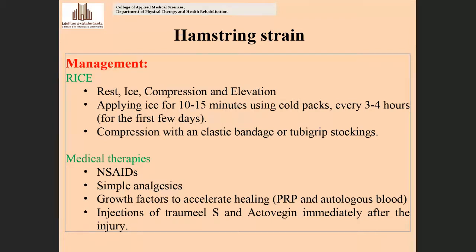Treatment of hamstring strain uses the RICE protocol: give complete rest to the hamstring muscles, apply ice immediately every two hours for 10 to 15 minutes, apply a compression bandage using crepe bandages, and keep the limb elevated at 40 to 60 degrees to reduce swelling and pain. Continue ice application using cold packs every three to four hours for the first few days.